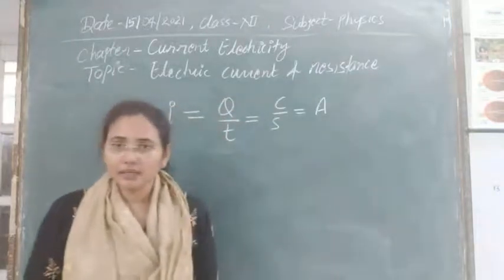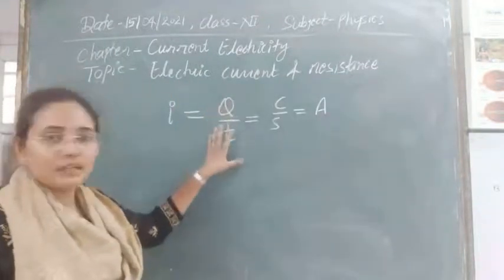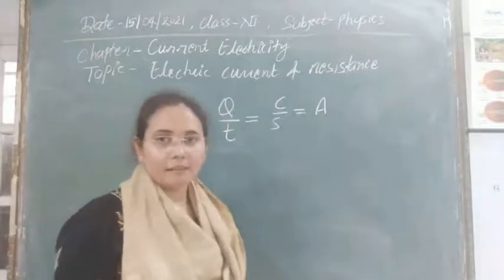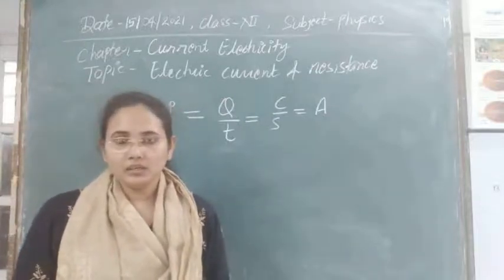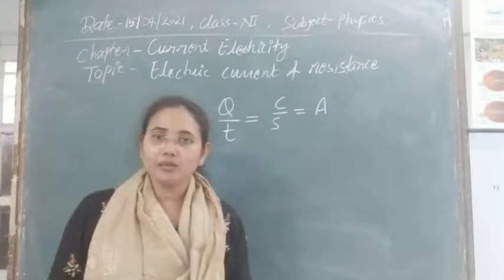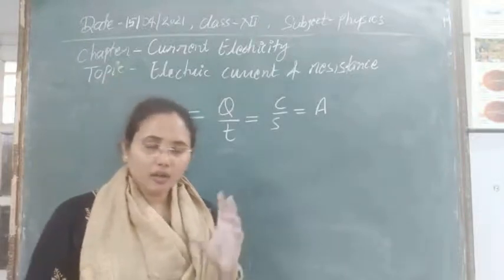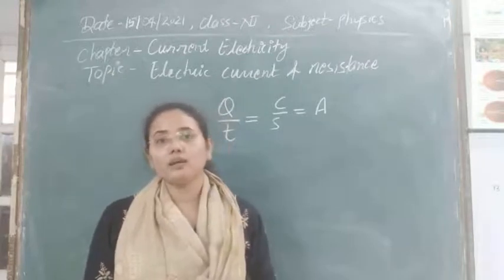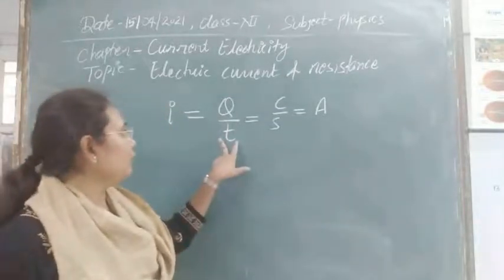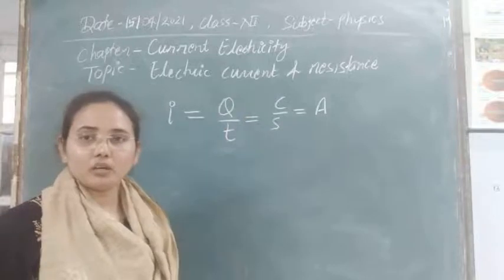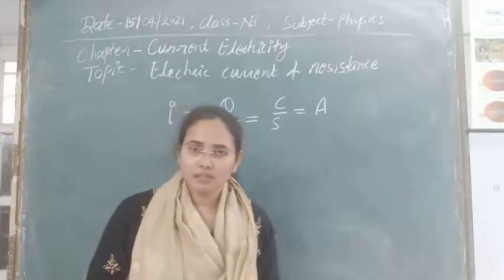Electric current is a fundamental quantity that can be defined by Q divided by T. If you have to define 1 ampere: 1 ampere is the value of current when 1 coulomb of charge flows in 1 second. So in unit time, the flow of 1 coulomb charge is known as 1 ampere. Simply, if you put T equal to 1 second, then 1 ampere equals 1 coulomb charge flowing per second.